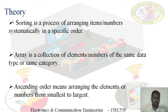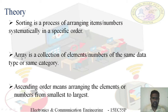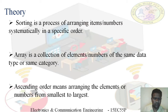We will now see the theory part. What is sorting? Sorting is a process of arranging numbers or items systematically in a specific order. An array is a collection of elements or numbers of the same type or same category. In our program, we are arranging elements in ascending order, which means arranging numbers from smallest to largest.